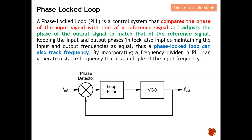A Phase-Locked Loop is a control system that compares the phase of the input signal with that of a reference signal. Here you can see the phase detector — this is the reference signal and this is the input signal. The key job of the PLL is simply to compare the phase of the input signal with that of the reference signal, and then adjust the phase of the output signal to match that of the reference signal.